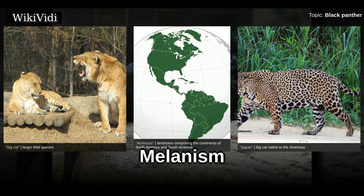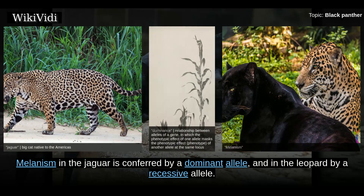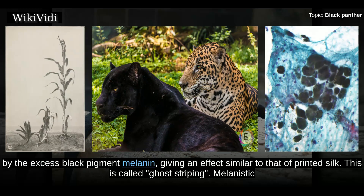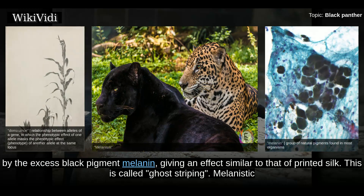Melanism. Melanism in the jaguar is conferred by a dominant allele, and in a leopard by a recessive allele. Close examination of the color of these black cats will show that the typical markings are still present, but are hidden by the excess black pigment melanin, giving an effect similar to that of printed silk. This is called ghost striping.